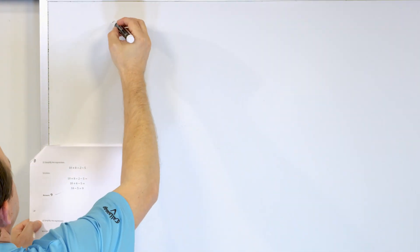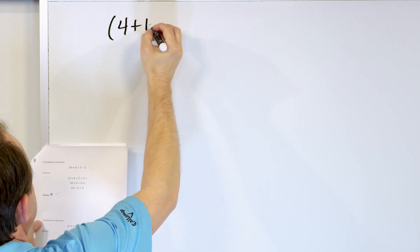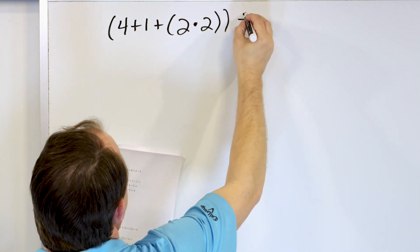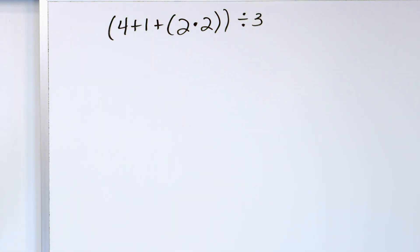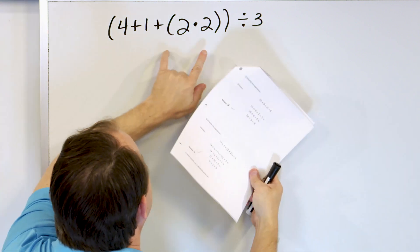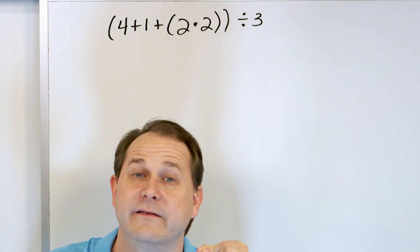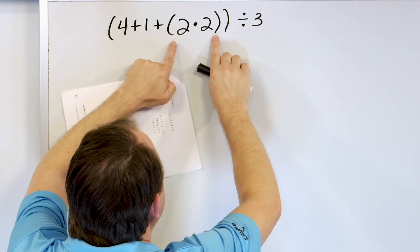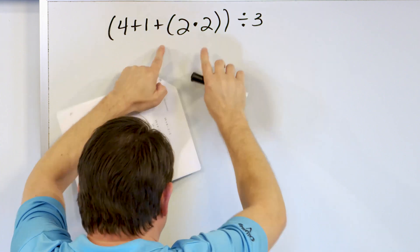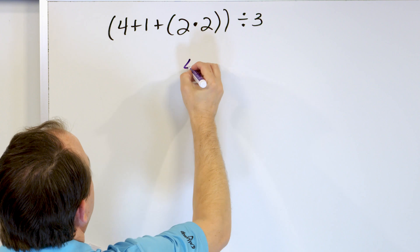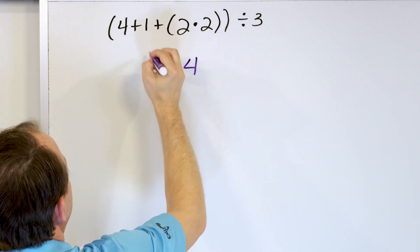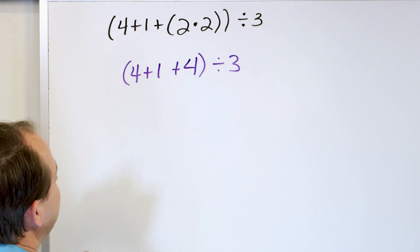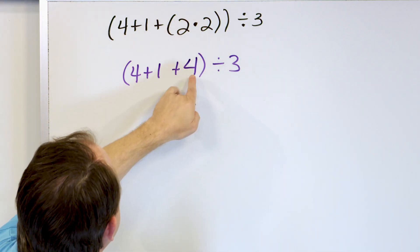Let's take a look at problem number 3: 4 plus 1 plus parentheses 2 times 2 close parentheses close another parentheses divided by 3. Remember, we always do parentheses first, and if you have a nested set of parentheses inside one another, you must do the innermost parentheses first. We see parentheses here, but inside there is another set of parentheses — so 2 times 2 has to go first. 2 times 2 is 4. The plus 1 plus 4 with the outer parentheses comes later, as does the divide by 3.